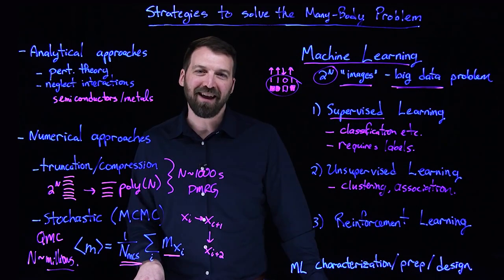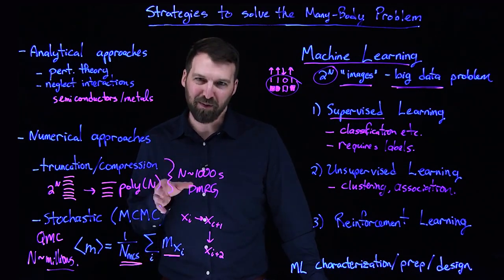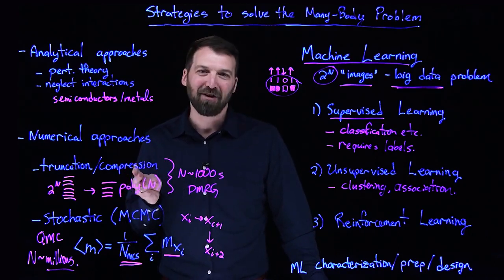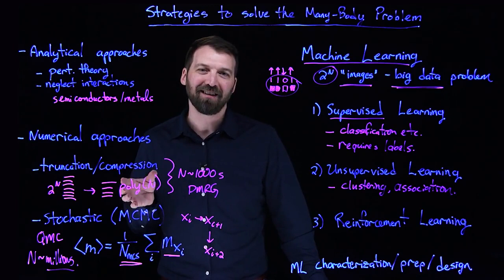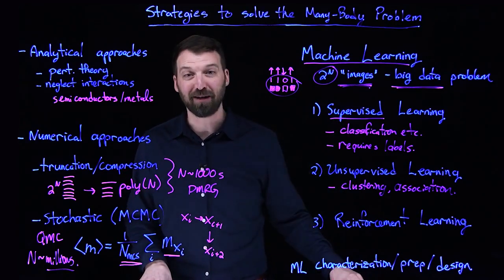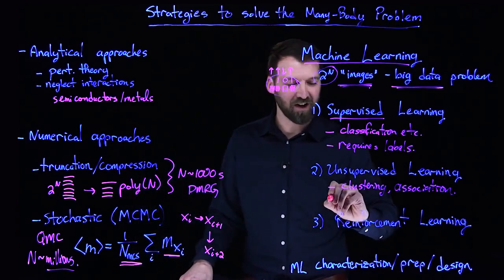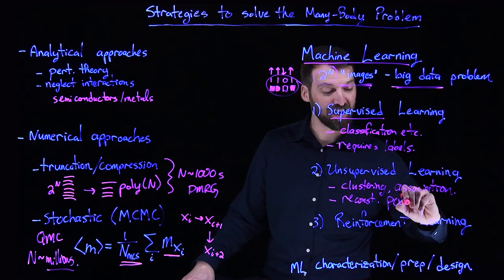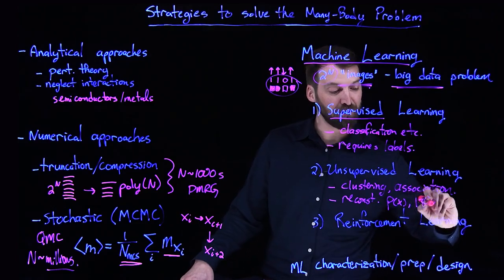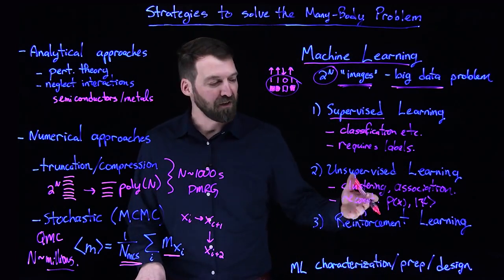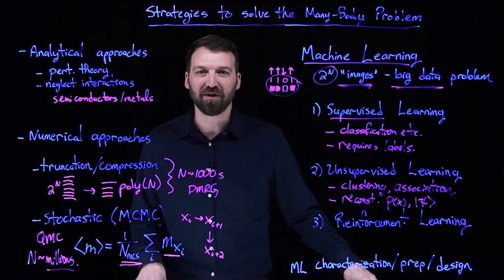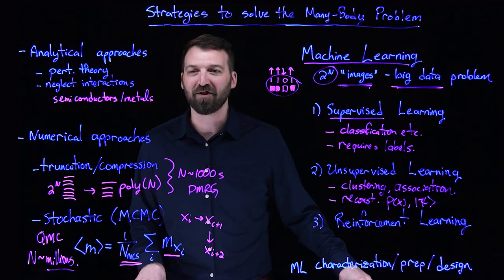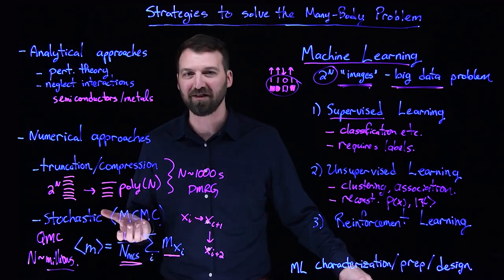Unsupervised learning can also be taking measurement data, which is a measurement performed on the wave function, say a projective measurement collapses the wave function, and essentially reconstructing that wave function from individual images or snapshots. That's like a reconstruction of, say, a probability distribution in the classical case or the full wave function in the quantum case. These reconstruction techniques based on machine learning are now being studied and compared to traditional techniques based on quantum state and quantum process tomography.